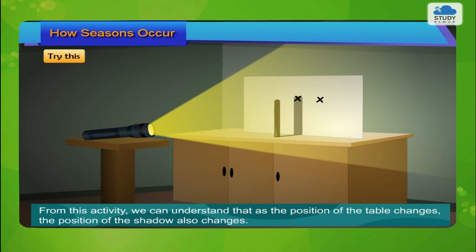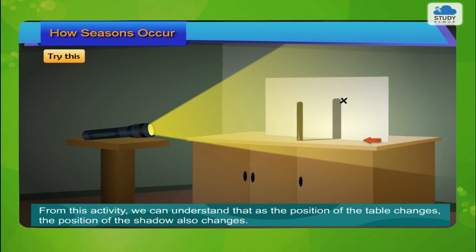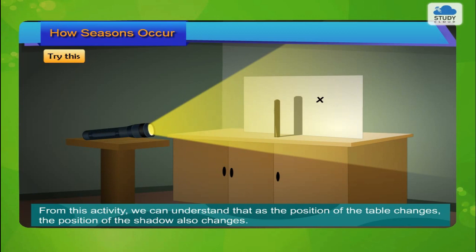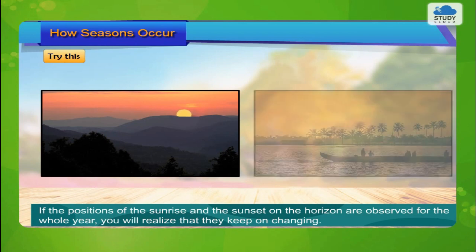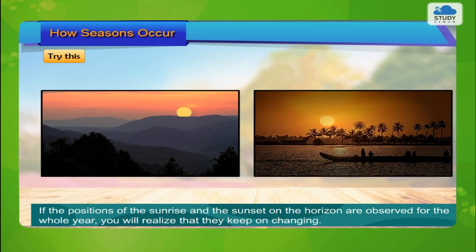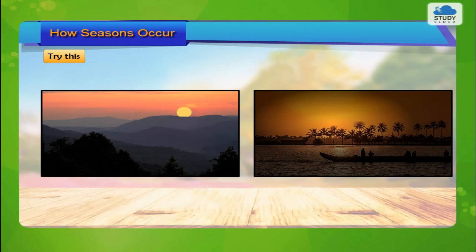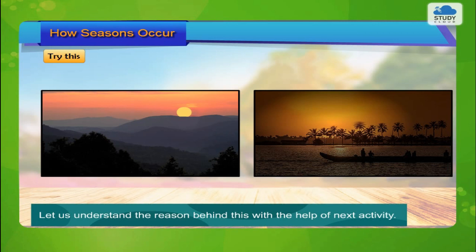Note the change in the location of the shadow. From this activity we can understand that as the position of the table changes, the position of the shadow also changes. If the positions of the sunrise and the sunset on the horizon are observed for the whole year, you will realize that they keep on changing. Let us understand the reason behind this with the help of the next activity.